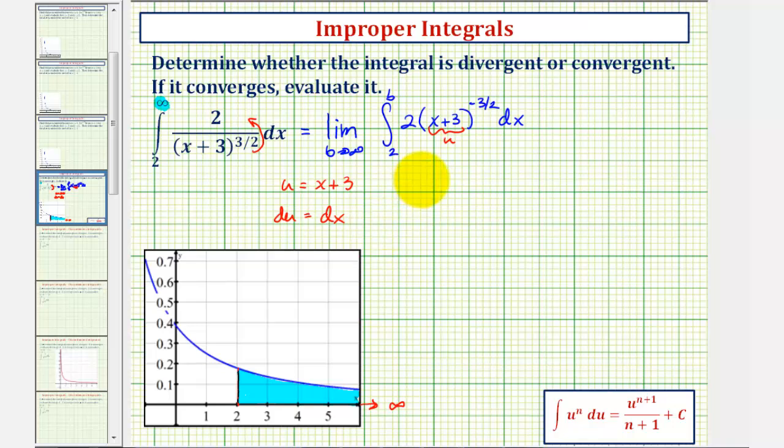So we can think of this as finding the antiderivative of 2u^(-3/2) using our integration formula. We'll have the limit as b approaches infinity of 2 times the quantity (x + 3), raised to the power of -3/2 + 1, that's -1/2, divided by -1/2.